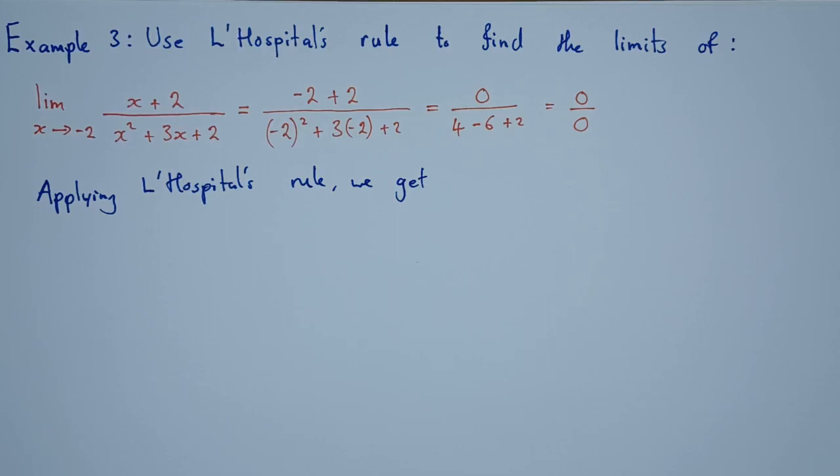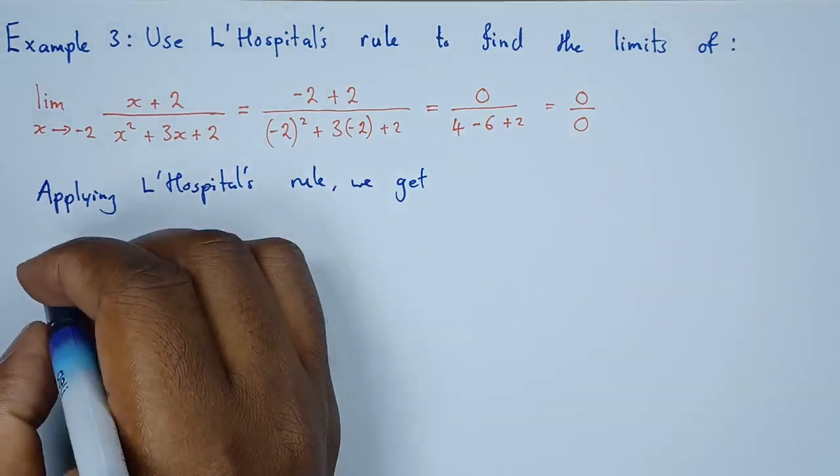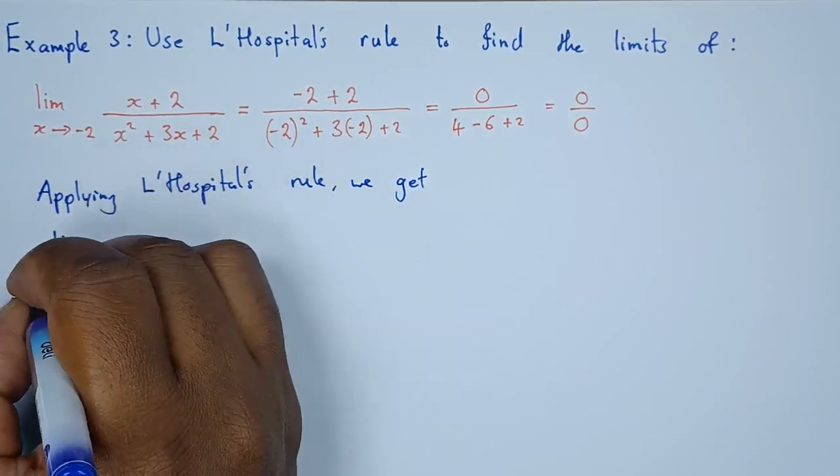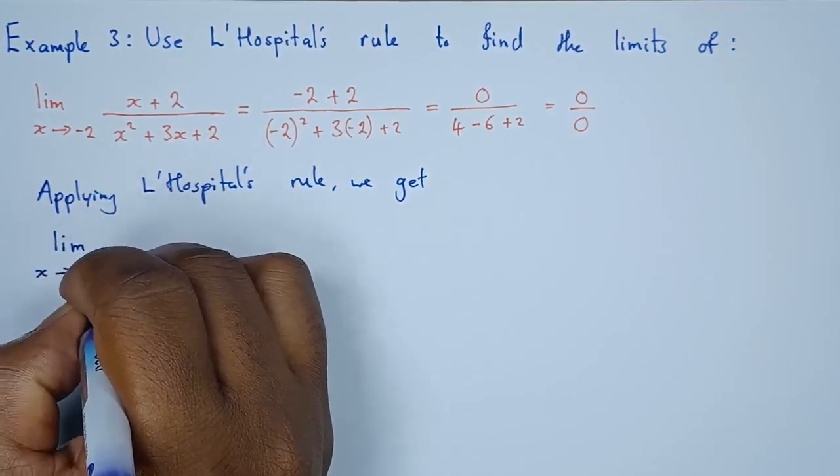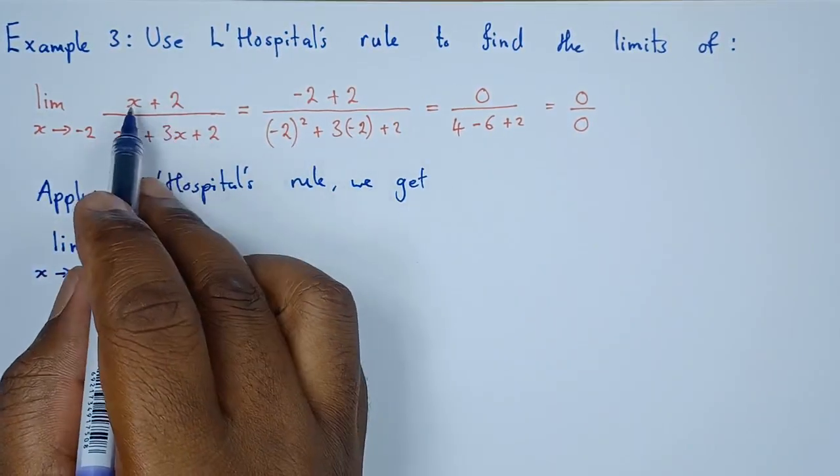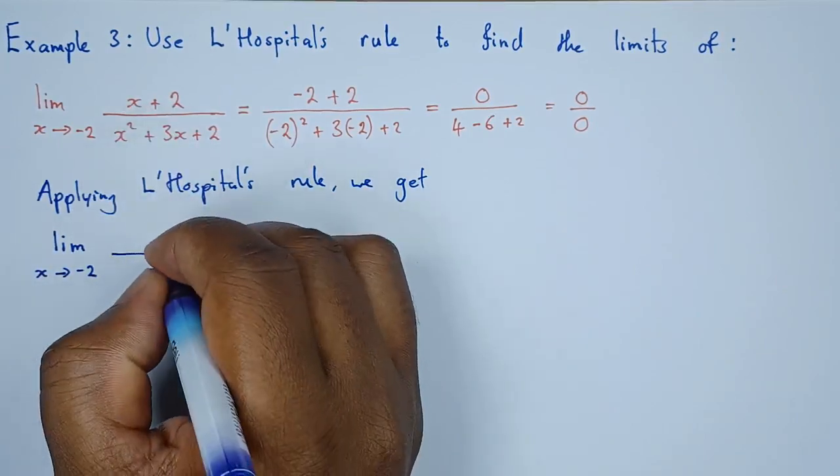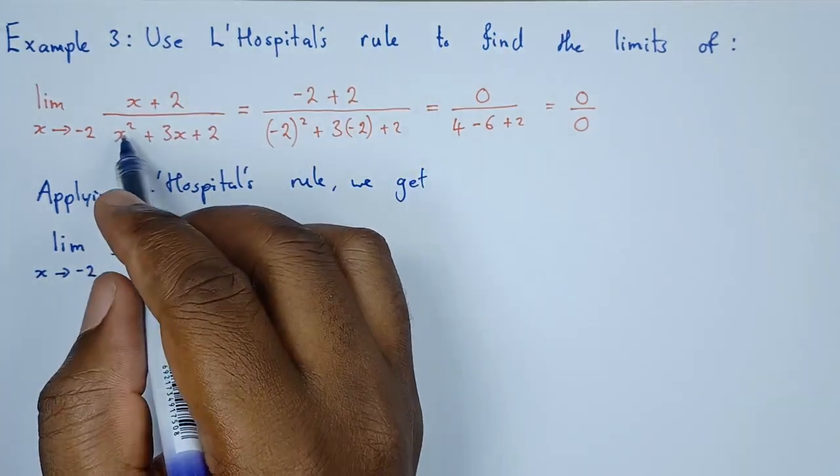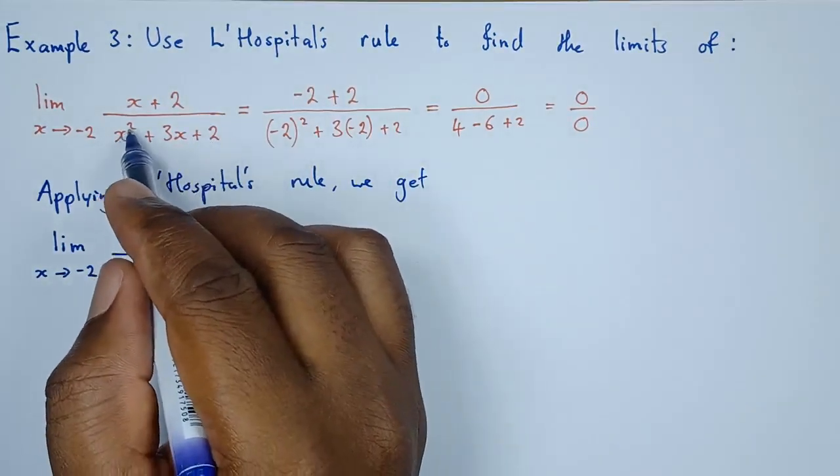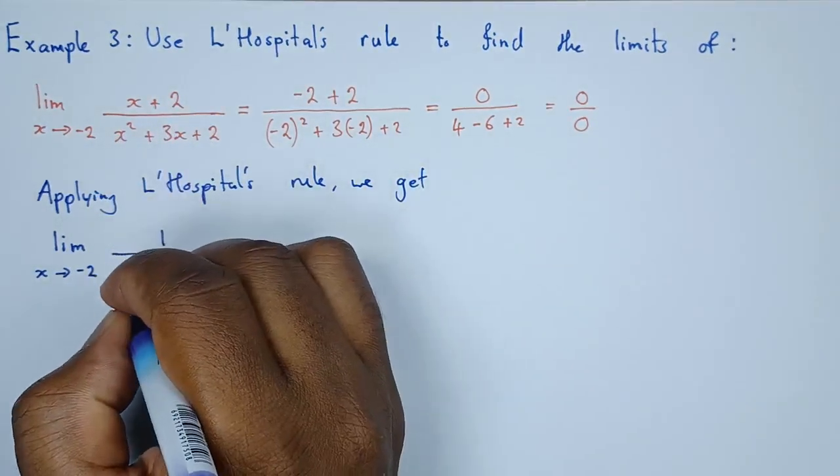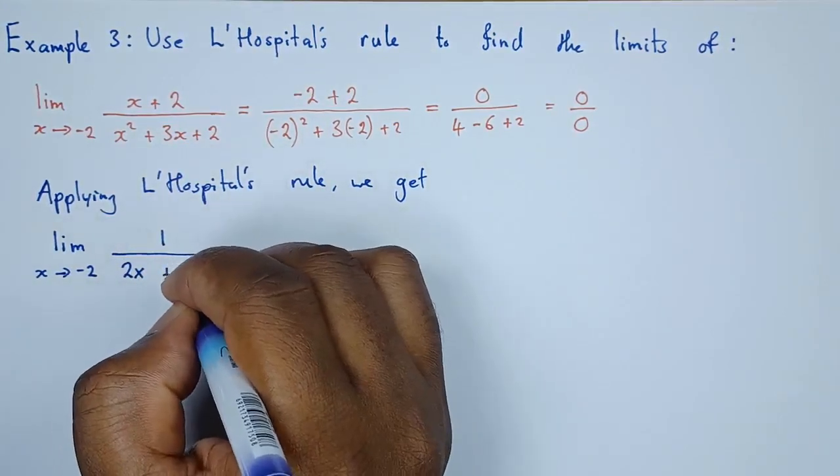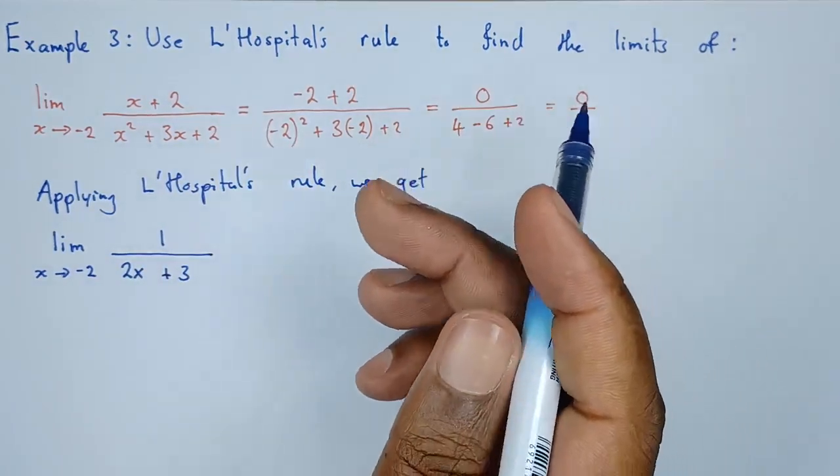So let's go ahead and take the derivative of both the numerator and the denominator. This is what we want to get: the limit as x approaches negative 2. The derivative of the numerator is simply 1 because plus 2 is a constant so that's 0. For the denominator, x squared derivative is 2x, 3x derivative is 3. Now 2 is a constant so its derivative is 0.